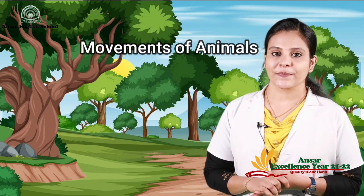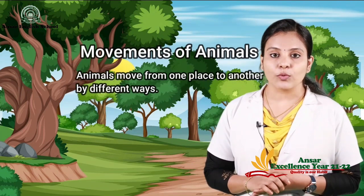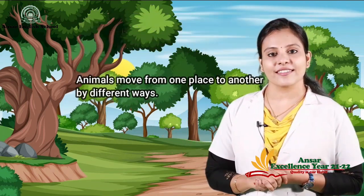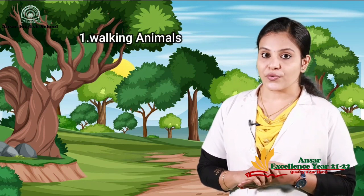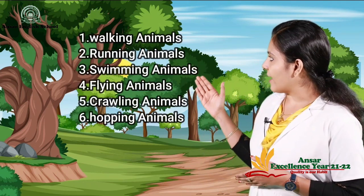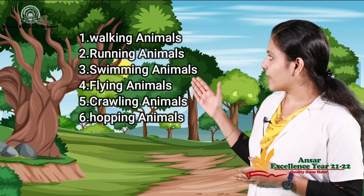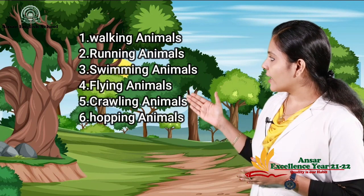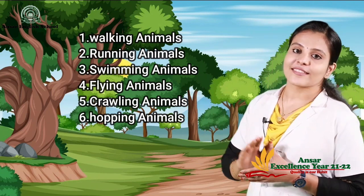Next we will learn about movements of animals. Animals move from one place to another by different ways. We can classify them according to their ways of movement: walking animals, running animals, swimming animals, flying animals, crawling animals, and hopping animals.